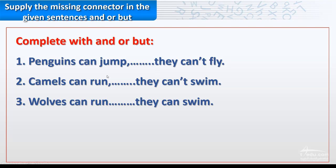Or you will say penguins can jump but they can't fly. So this is an opposite of this. Correct, but. Penguins can jump but they can't fly. So we use but to express the opposite, not giving extra information like and.